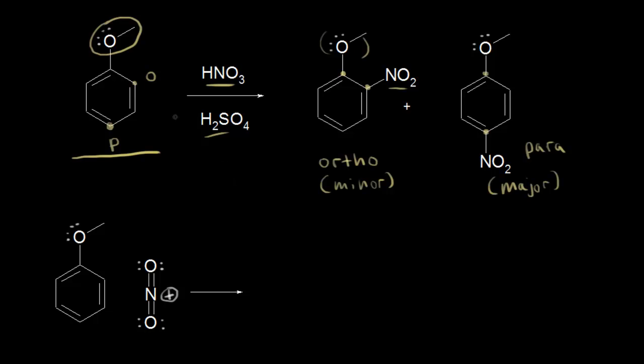There is another position on your aromatic ring. If we installed the nitro group on this position, we would call this the meta product. The meta product is not observed in high yields for this reaction, so we say that the methoxy group is an ortho/para director. We can also label the ortho position on the other side and the meta position by symmetry, but the meta product is not seen in a high yield.